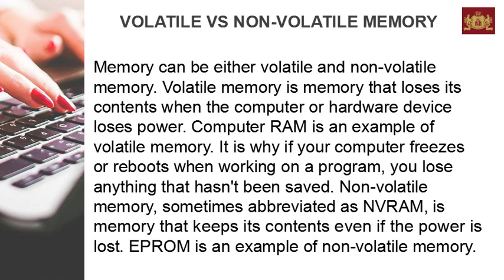Memory can be either volatile or non-volatile. Volatile memory is memory that loses its contents when the computer or hardware device loses power. Computer RAM is an example of volatile memory — it is why if your computer freezes or reboots, you lose anything that hasn't been saved. Non-volatile memory keeps its contents even if the power is lost. EPROM is an example of non-volatile memory.